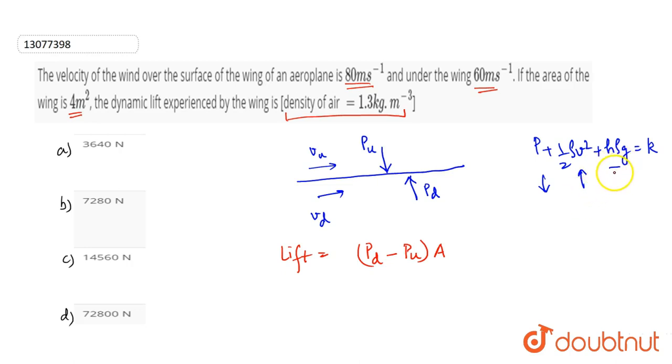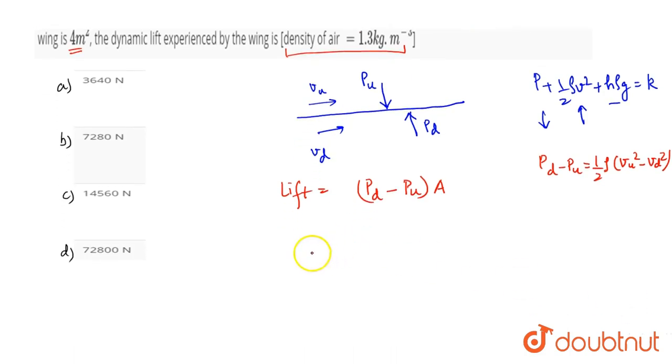we see H rho G term, so here height is the same. P downwards minus P upward is 1 by 2 rho times v upward square minus v downward square.